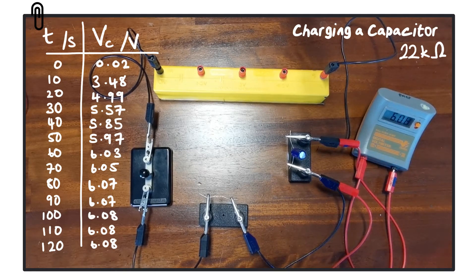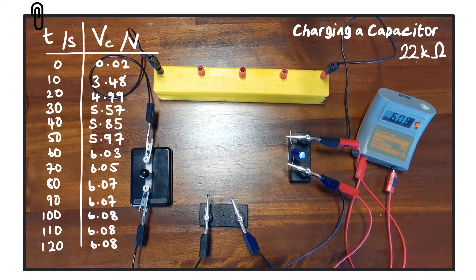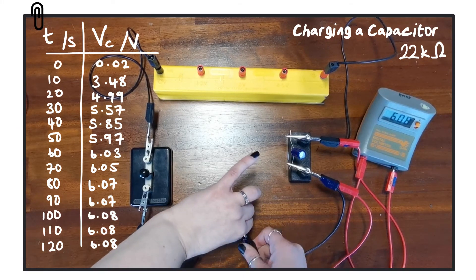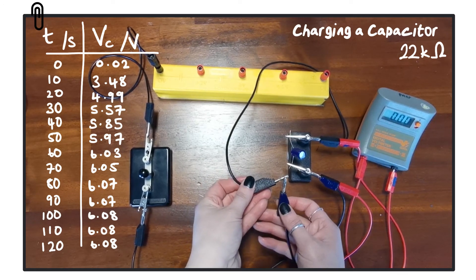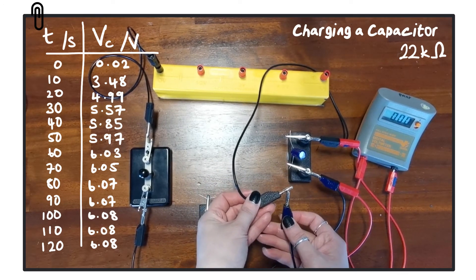Once we have a full set of results, we can very quickly discharge the capacitor by removing the leads from either side and touching them together. And you'll see the value in the voltmeter drops down to zero almost immediately.